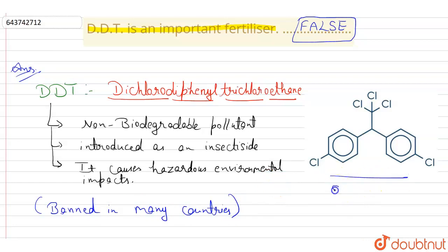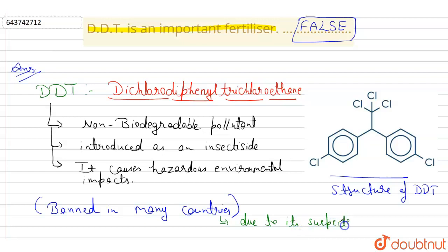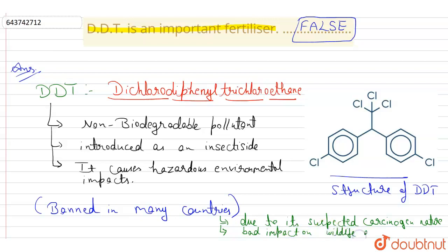Here is the structure of DDT. It is banned in many countries due to its suspected carcinogen nature, that is its cancer-causing nature. It also has its impact on wildlife and children. Thank you.